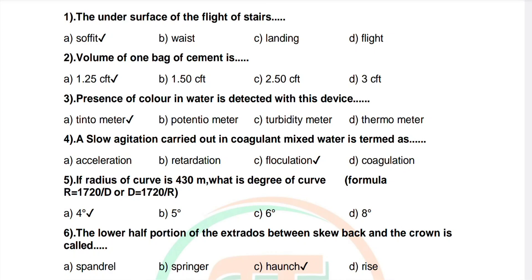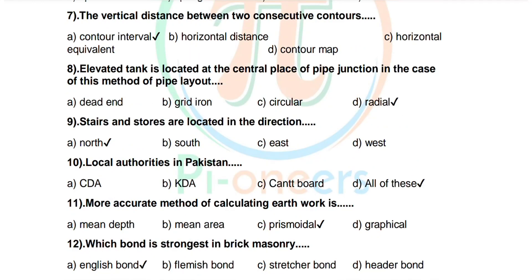Question 7: The vertical distance between two consecutive contours. Options: contour interval, horizontal distance, horizontal equivalent, contour map. Correct answer is contour interval. Question 8: Elevated tank is located at the central place of pipe junction in the case of this method of pipe layout. Options: dead end, grid iron, circular, radial. Correct answer is radial.